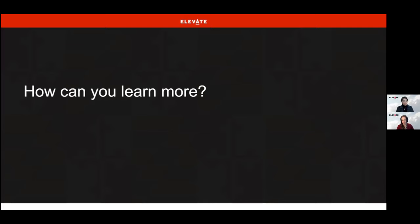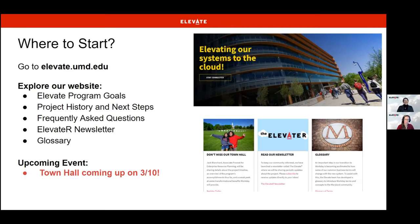So how can you learn more? The best place to start if you want to learn more about functional overviews, the Elevate program, or anything, would be our website: www.elevate.umd.edu. There you can find the program goals, our project history and timeline, and what some of the next steps are. We also have a frequently asked questions section which we are adding to with sessions such as this, our town halls, and things of that nature. We've already gotten a couple of questions today that you can expect to see on the website shortly.